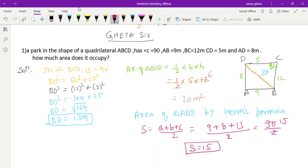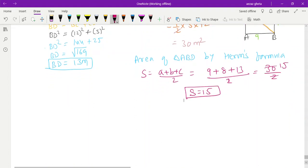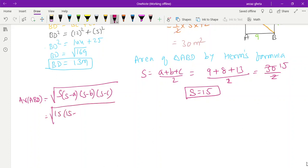Apply Heron's formula. Area of triangle ABD = √[S(S-A)(S-B)(S-C)]. S is 15, 15 minus 9, 15 minus 8, 15 minus 13.